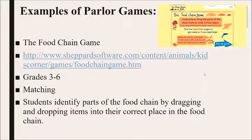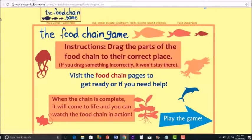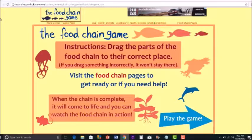The Food Chain Game is a science game that teaches students about the food chain in animals. Instructions: drag the parts of the food chain to their correct place. If you drag something incorrectly, it won't stay there. Visit the food chain pages to get ready or if you need help. When the chain is complete, it will come to life and you can watch the food chain in action.